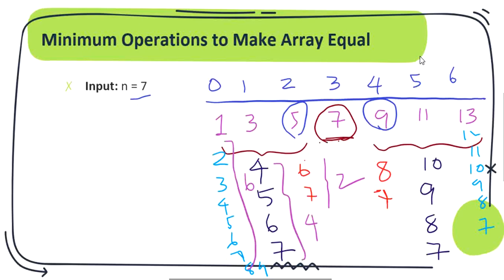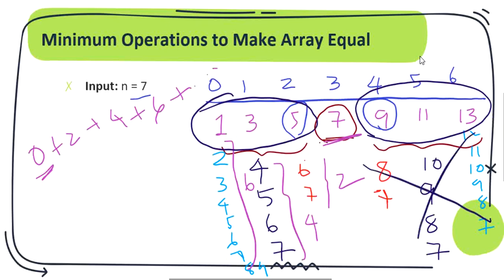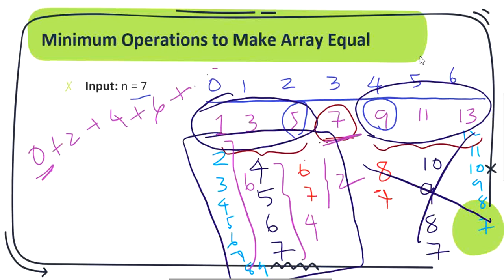So the step counts are 0, 2, 4, 6 — a sequence of even numbers. No steps are required to convert 7 to 7, then 2, 4, 6 and so on based on array size. The number of steps to convert the first half is the same as for the second half since we change both sides simultaneously, so we only need to sum the steps for the first half.